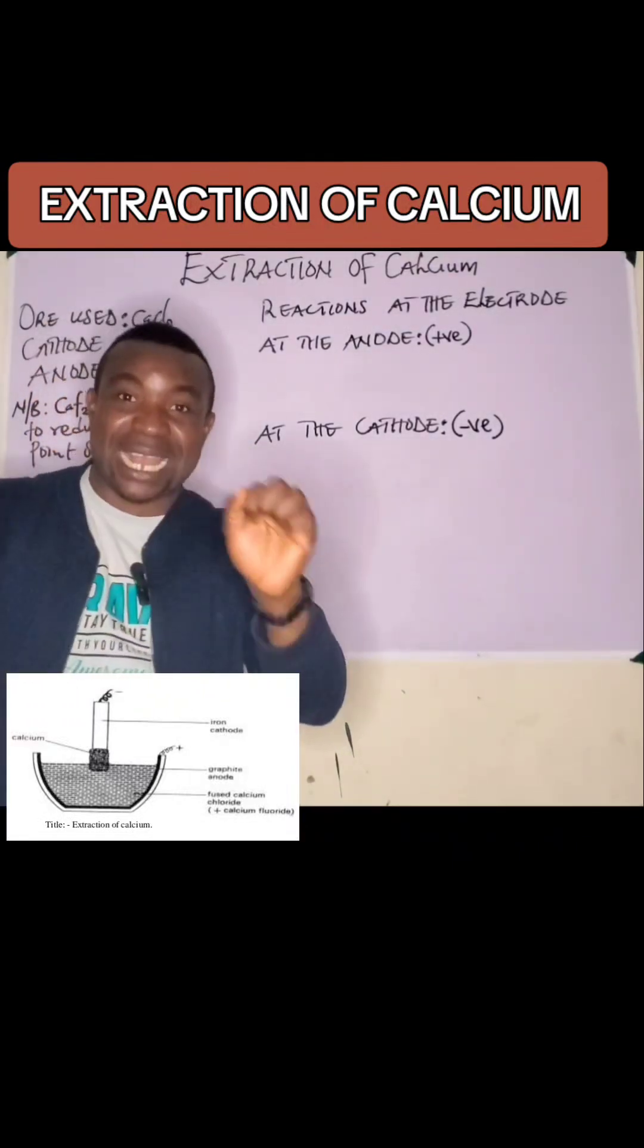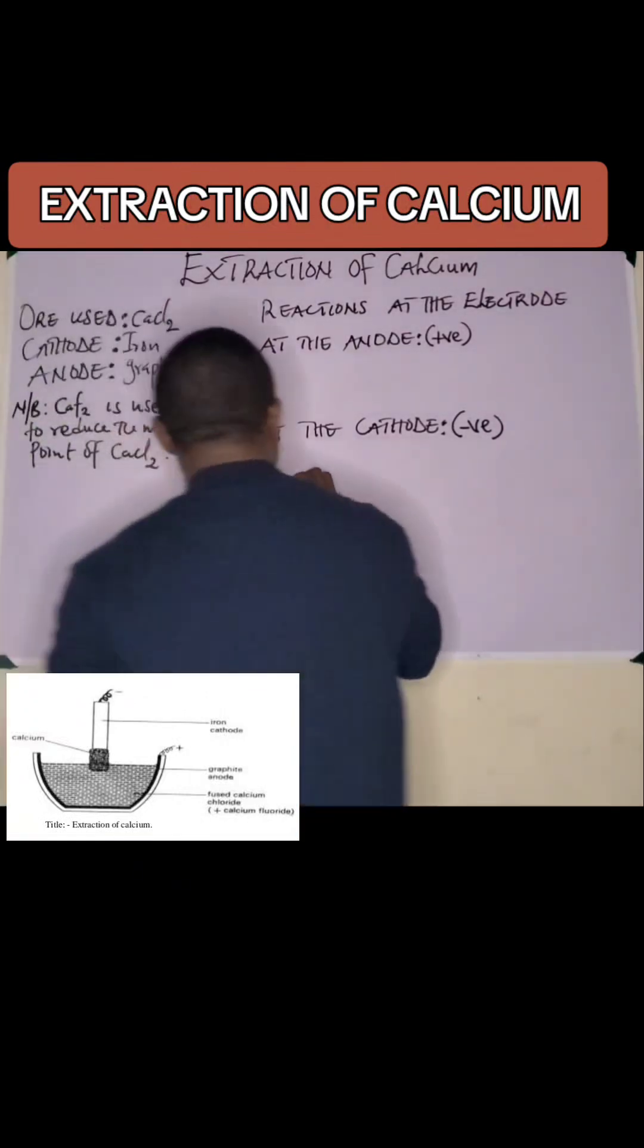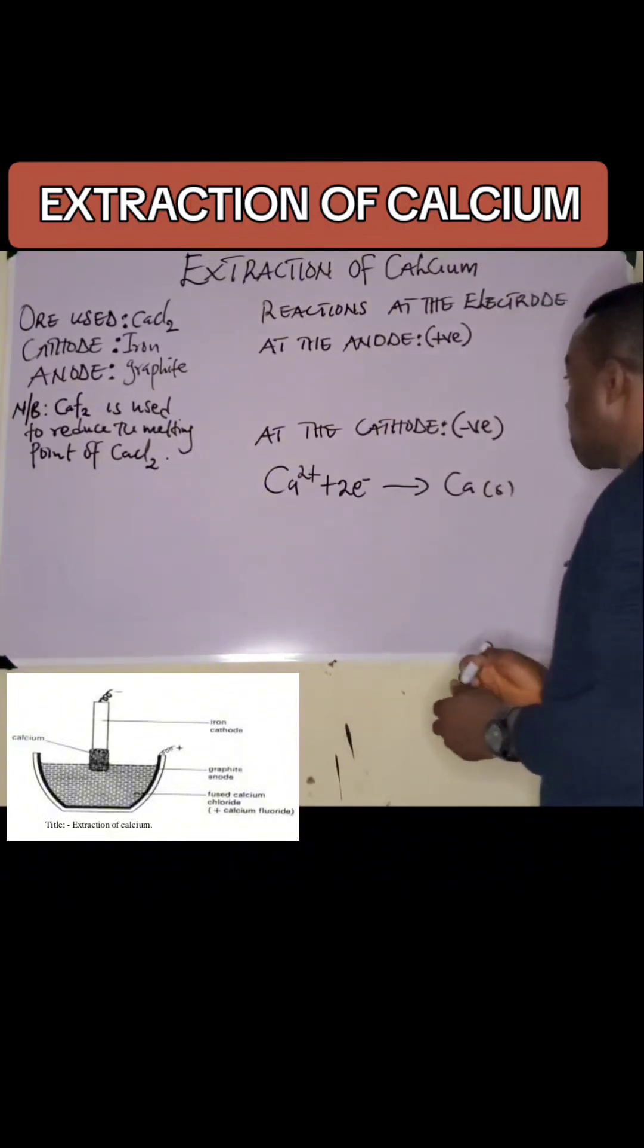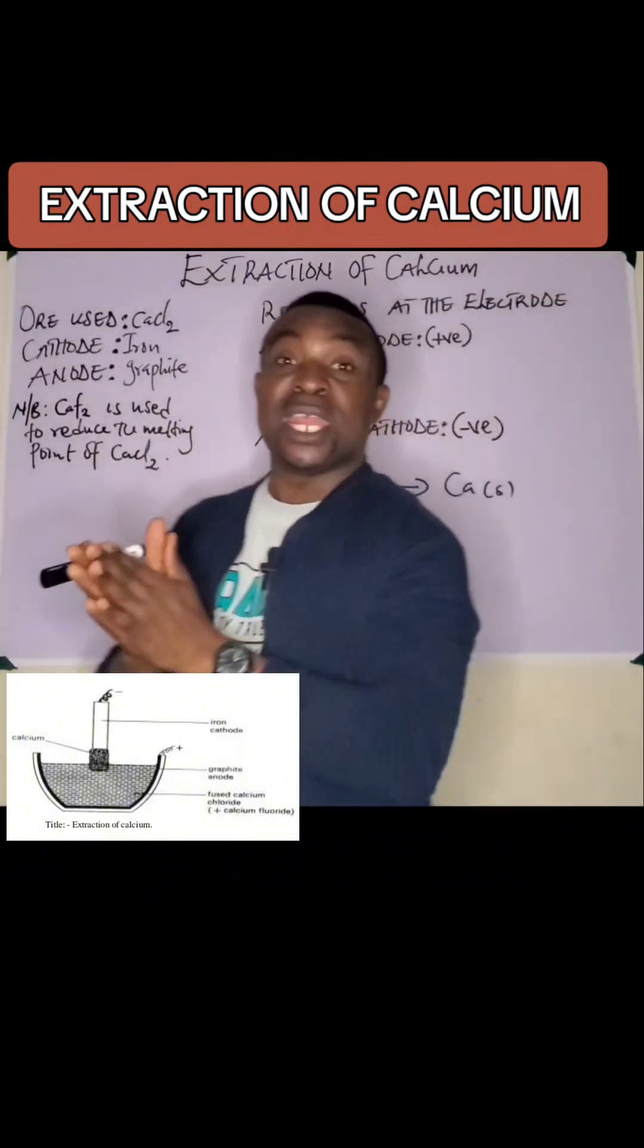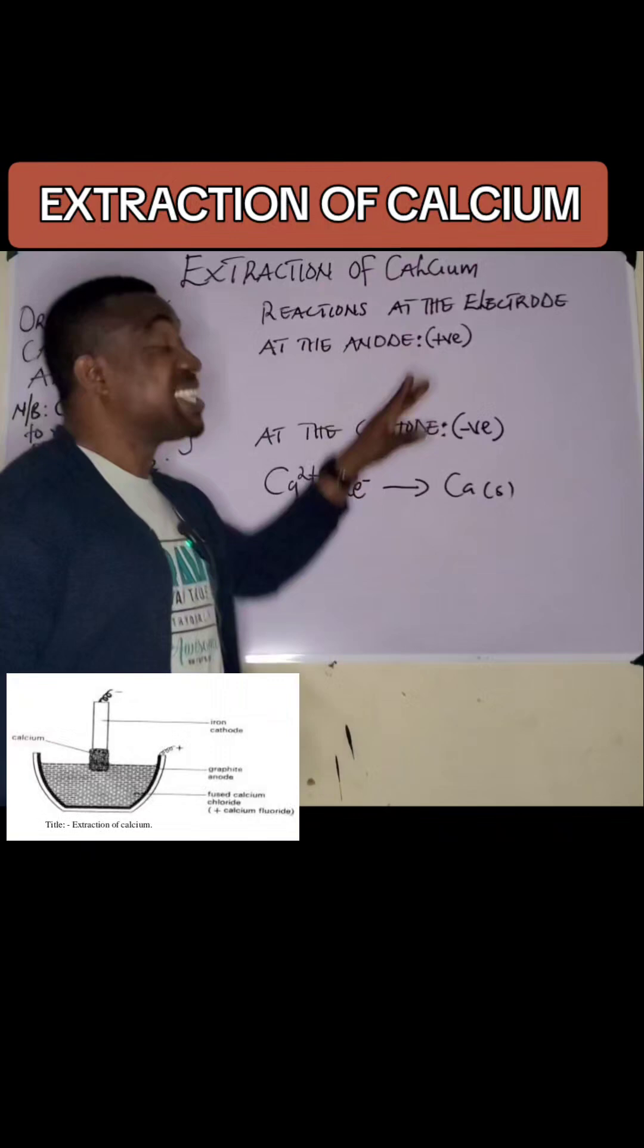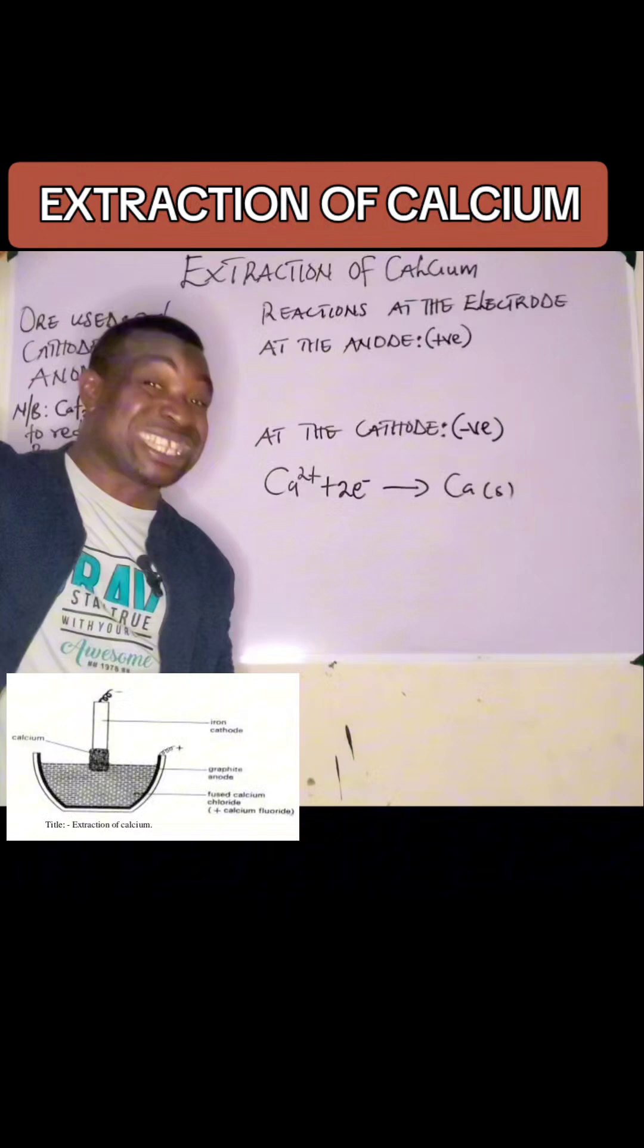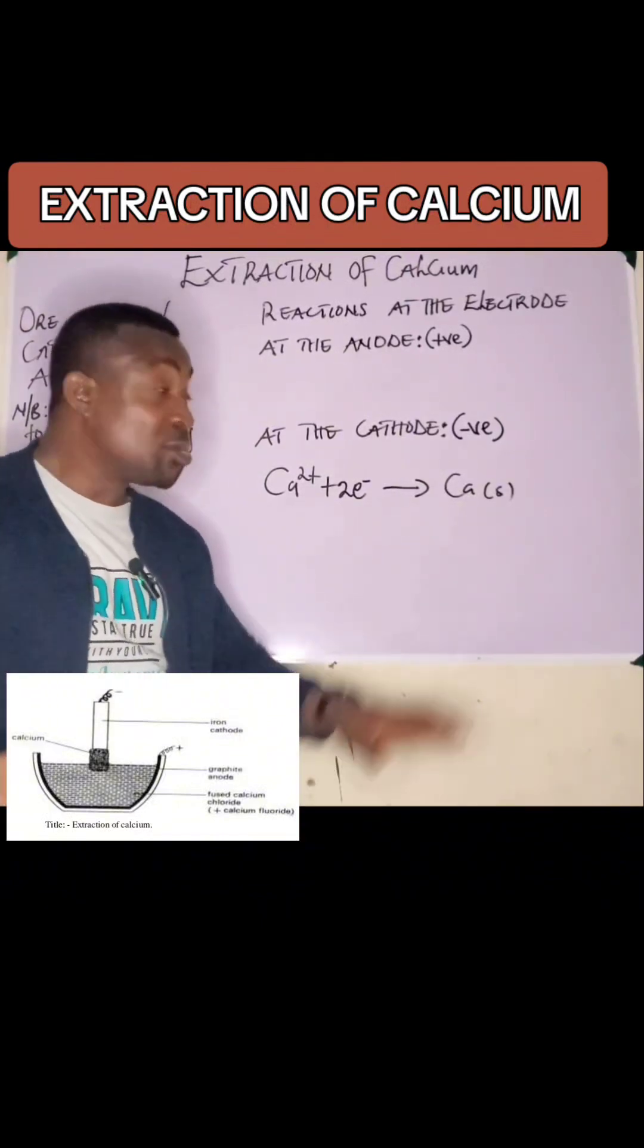At the anode, chlorine which was negatively charged will go to the positive anode in order to give back the electrons it has gained when they were in ionic state. Chlorine is going to lose the electrons to become chlorine atoms in order to form chlorine molecules.